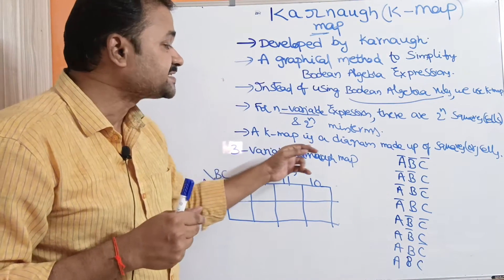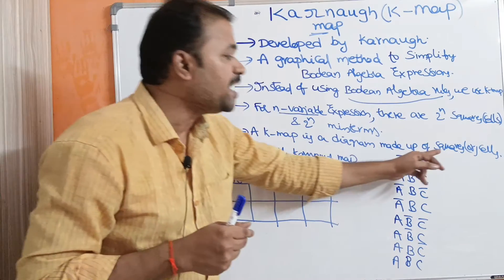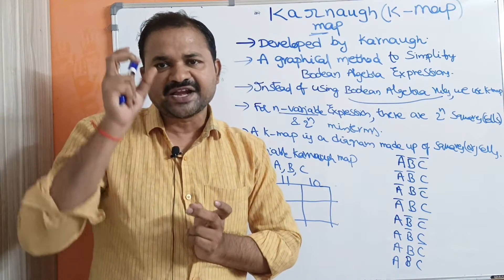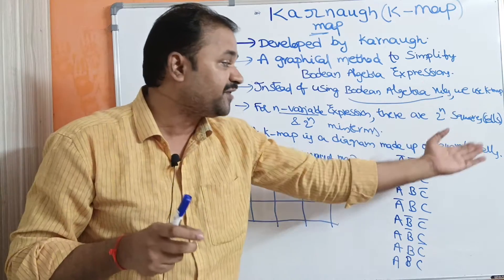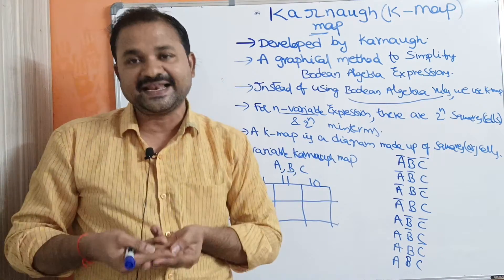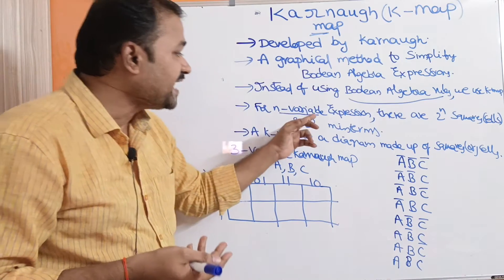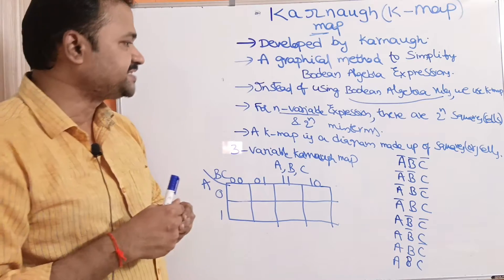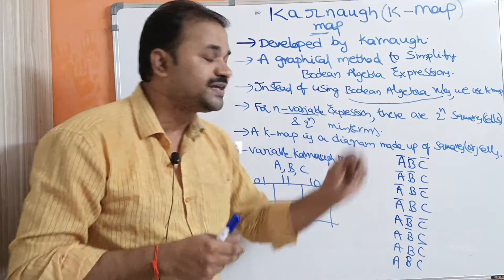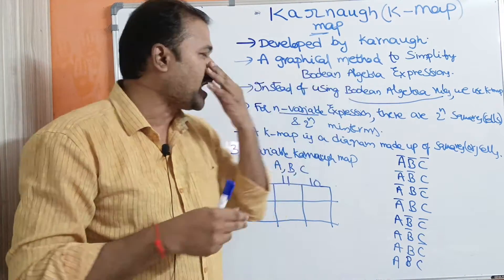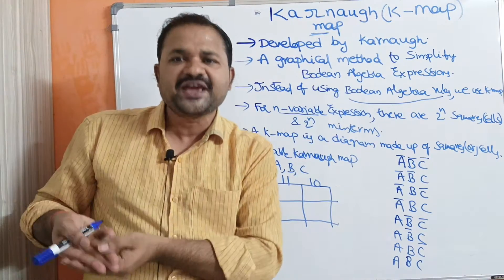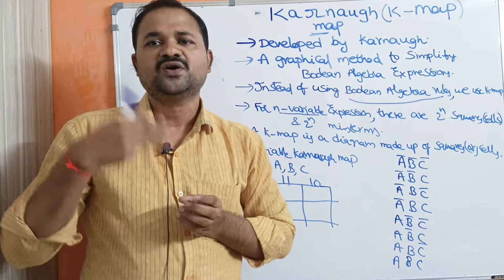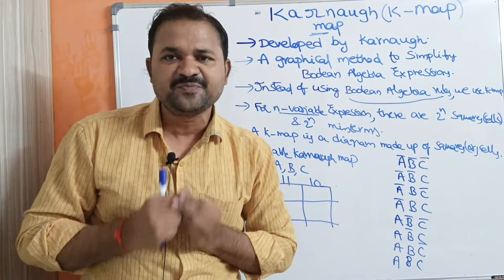A K-map is a diagram made up of squares or cells. For an n-variable expression, there are 2^n squares or cells and 2^n minterms. We can simplify up to 5 variables, so we can have a 2-variable, 3-variable, 4-variable, or 5-variable Karnaugh map.